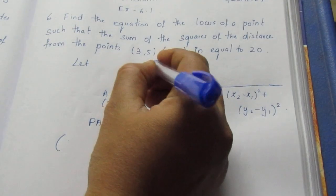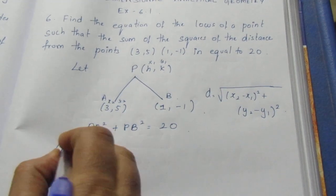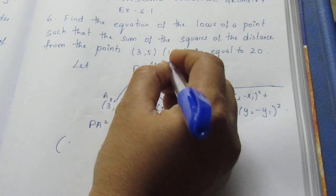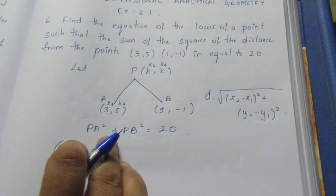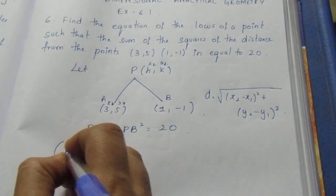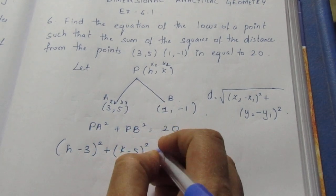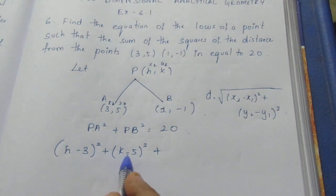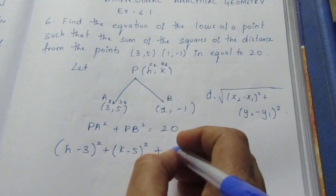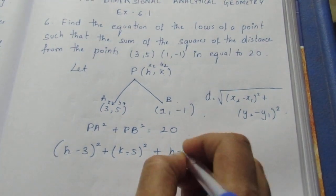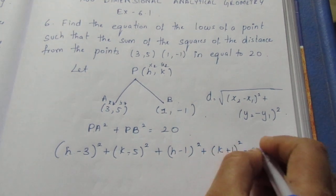Now we assign coordinates: let P be (h, k), A be (x₁, y₁) = (3, 5), and B be (x₂, y₂) = (1, -1). Substituting into the distance formula squared gives: (h - 3)² + (k - 5)² plus (h - 1)² + (k + 1)² = 20.